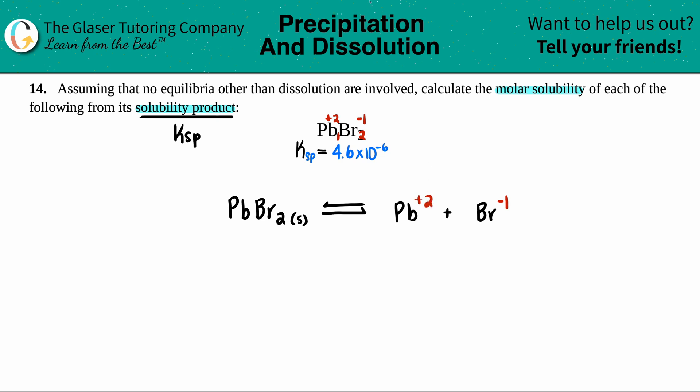And now since we have the charges, that means that they're aqueous. And then just make sure that you balance. I have one lead, one lead, but I have two bromines. So I have to come over here and say that I have two Br minuses. And now the balanced equation is done.